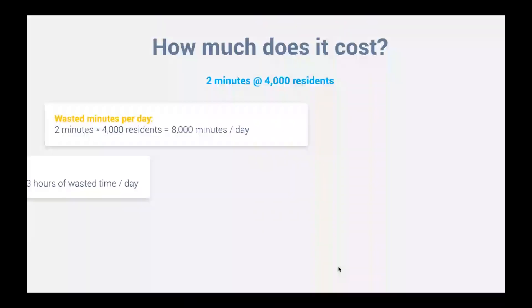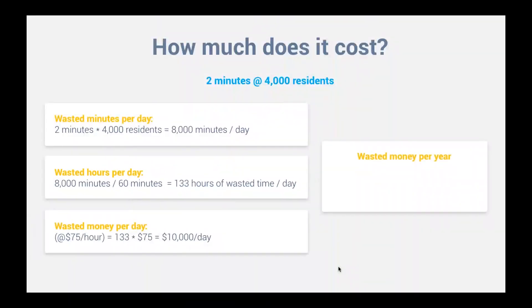People say, 'What does this have to do with the web?' It's extremely important. Think about the math: if this costs me only two minutes on average, and there are 4,000 residents in the apartment complex running into the same problems, it translates to almost $3,650,000 in lost value — pain and agony that 4,000 people are going through on a daily basis.